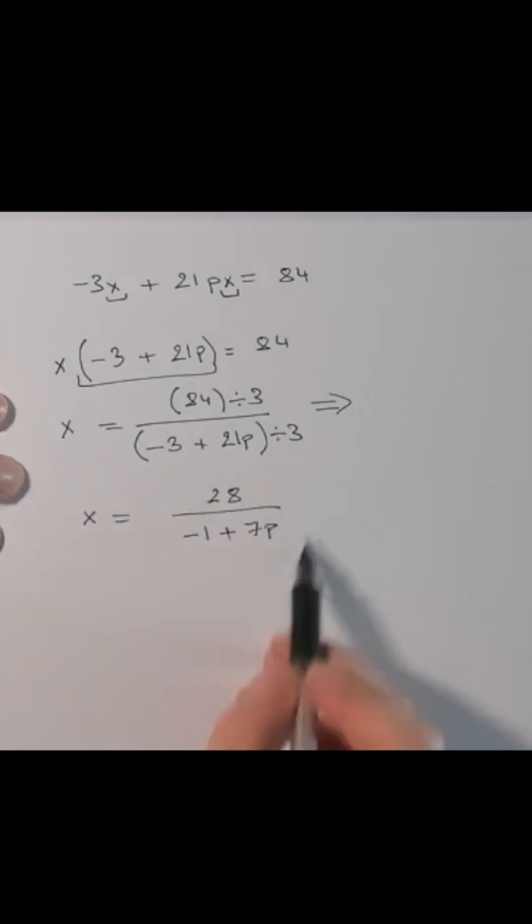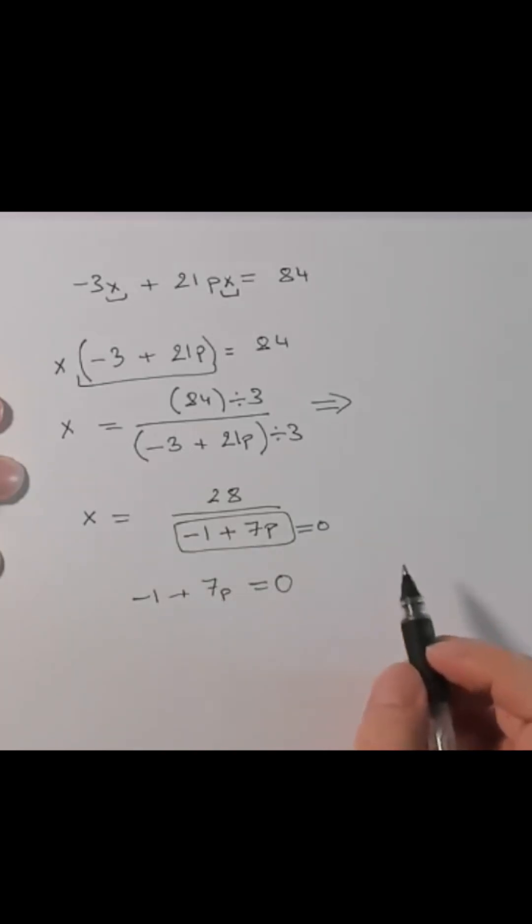So in order for this equation to be false, in order for it not to have any solution, this expression here must be equal to 0. Minus 1 plus 7p equals 0.